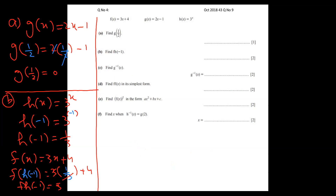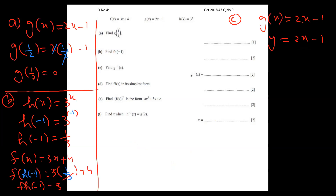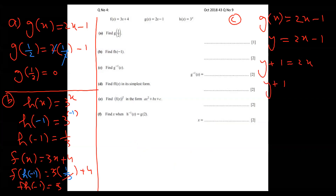Part c: find g inverse. Copy g of x, then remove the function name and write y. Currently y is the subject, but I need to make x the subject. One comes over, then y comes over, and two divides because it was multiplying.